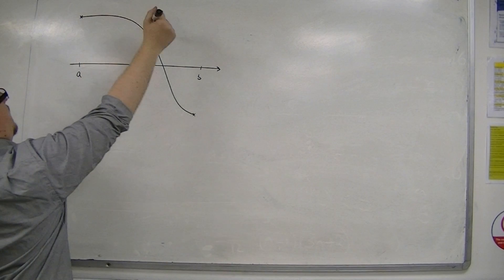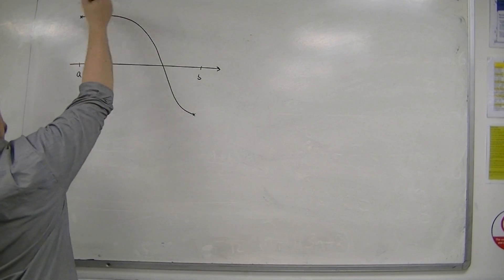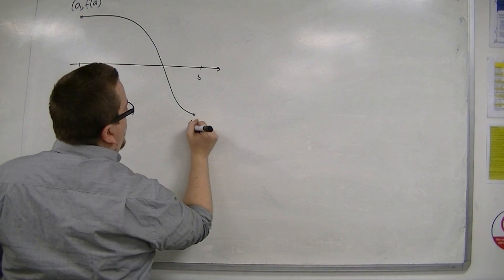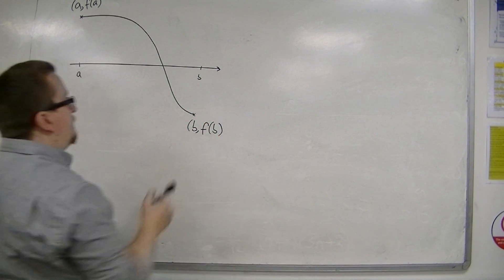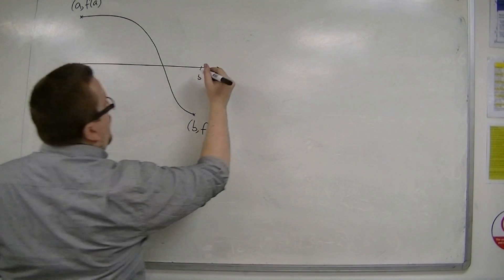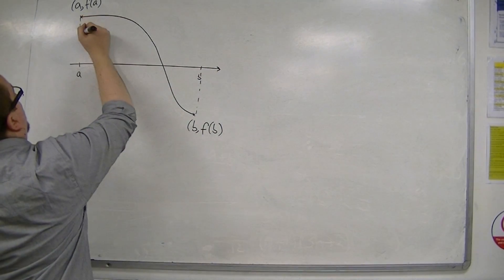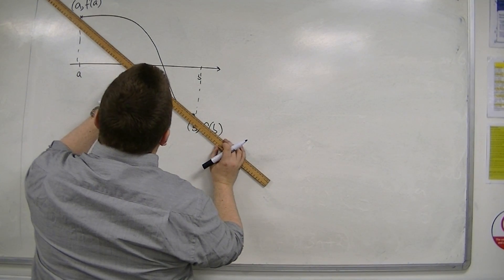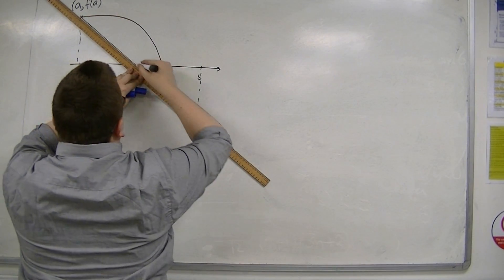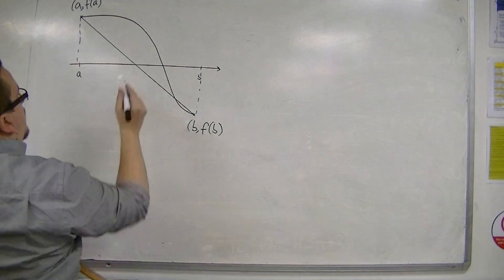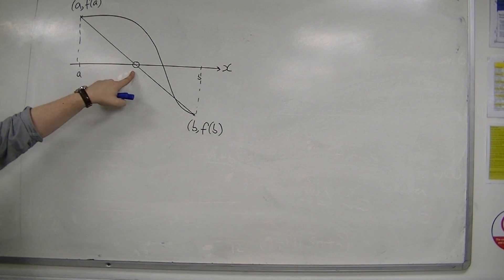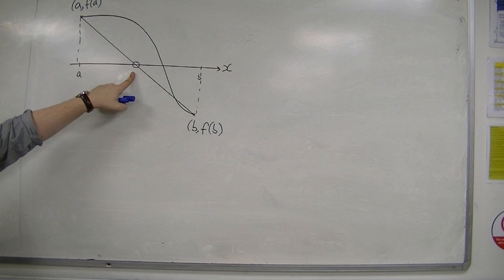Okay, so this is y equals f of x. So this point would have the coordinate (a, f(a)), and this point would have the coordinate (b, f(b)). Now, if instead I drew a straight line between the two values, then I could use where that line crosses the x-axis as an approximation to the overall solution.